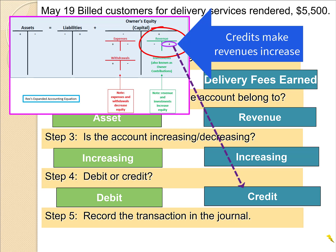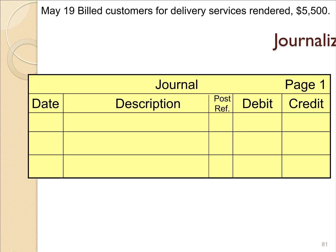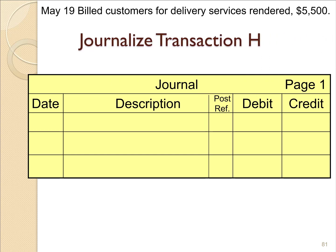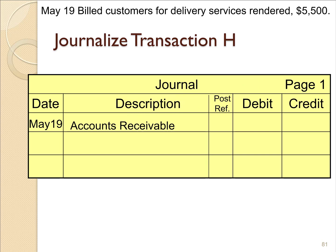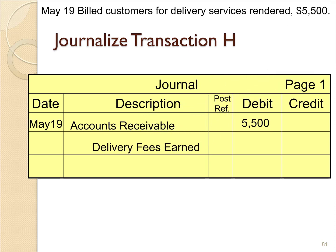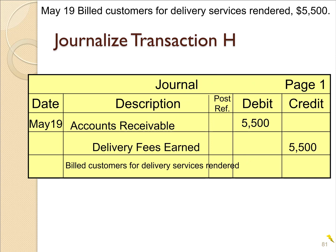So we need to get out our journal page. Don't forget to skip a line between journal transactions. First, list the date: May 19th. Then list the debit account — accounts receivable. You can abbreviate that as AR in your journal. The debit was $5,500. And then the other account was delivery fees earned, with revenue increasing. Then we need some sort of explanation: billed customers for delivery services rendered.